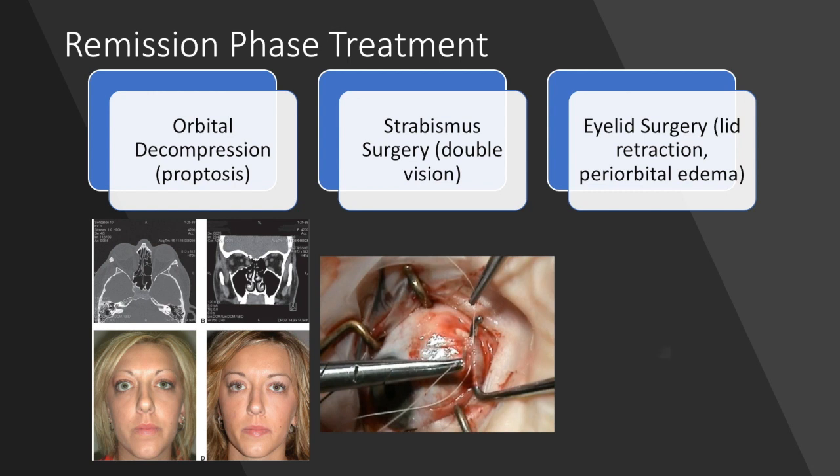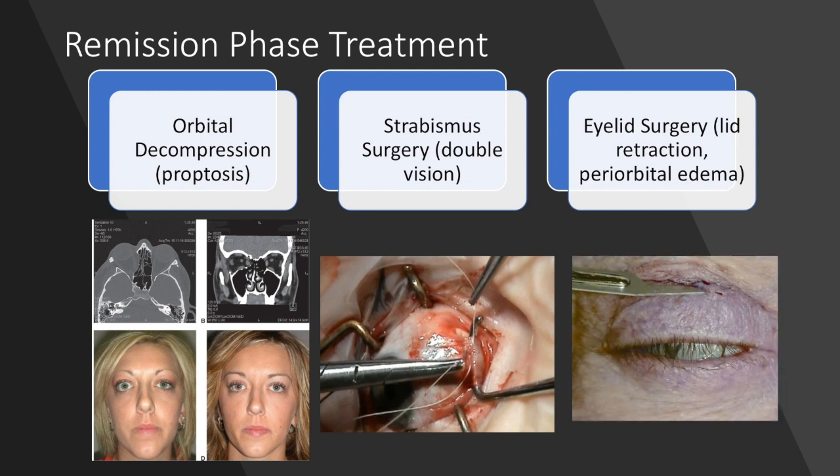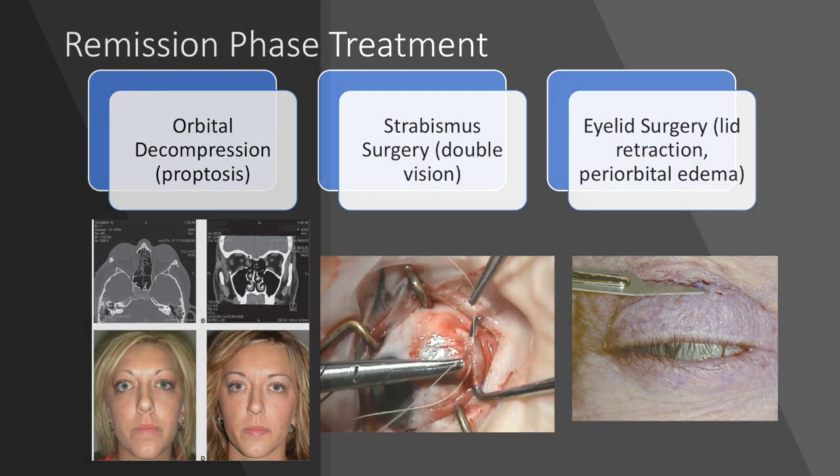Lastly, eyelid surgery can be performed to correct for lid retraction or periorbital edema. This is done last because the strabismus surgery may alter the position of the eyelid.